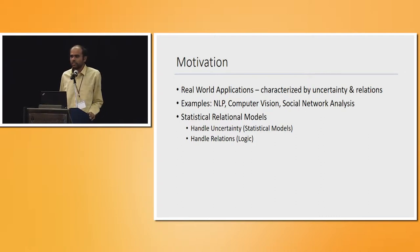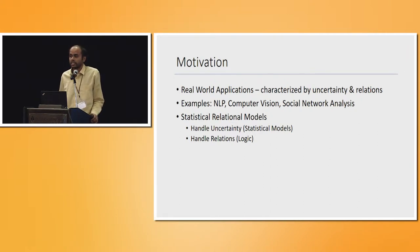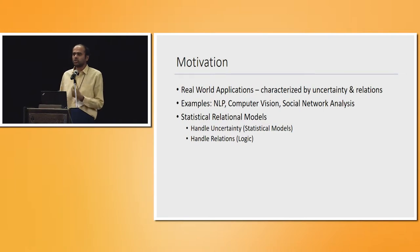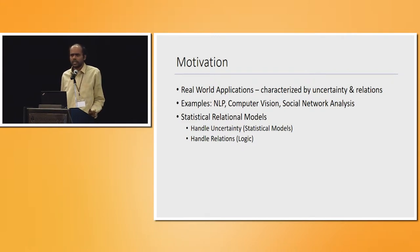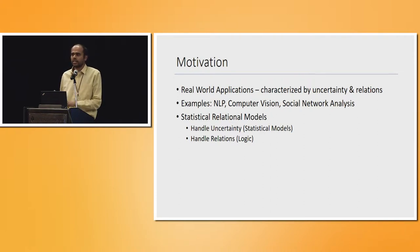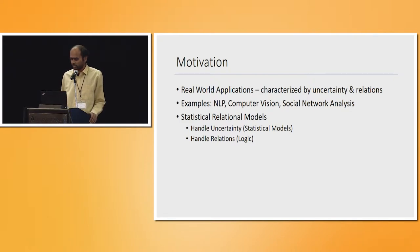Here is some motivation for the work. A lot of real-world applications are characterized by uncertainty and relations. For example, NLP, computer vision, social network analysis — you have entities and relationships between them, and uncertainty that you want to model using well-founded probabilistic models. Statistical relational models have been around for about a decade and can handle both these aspects: uncertainty via probabilistic graphical models, and relations using first-order logic. That will be the basic framework for this talk.